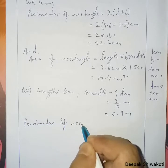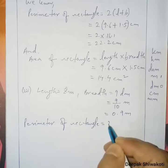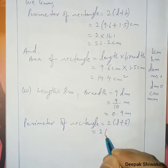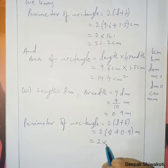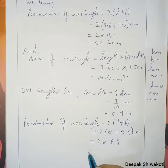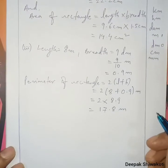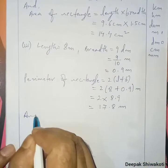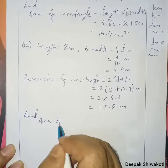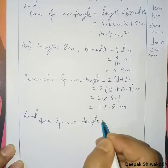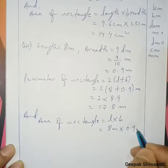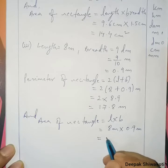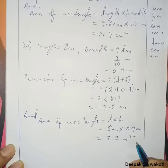Perimeter of rectangle is equal to 2 into (length plus breadth), that is 2 into (8 + 0.9) meter. So 2 into 8.9 gives us 17.8 meter as the perimeter. Now for the area: area of rectangle is equal to length into breadth, so 8 meter into 0.9 meter equals 7.2 meter square.